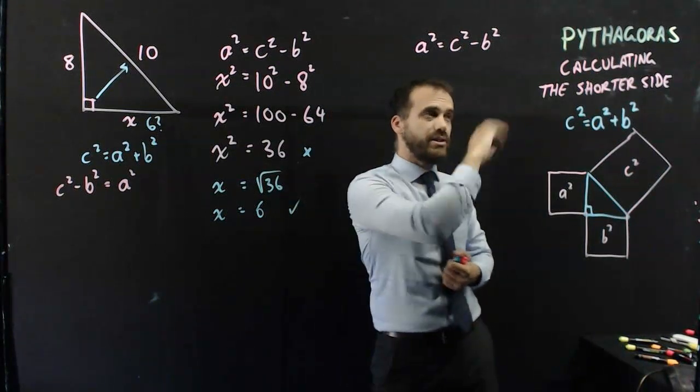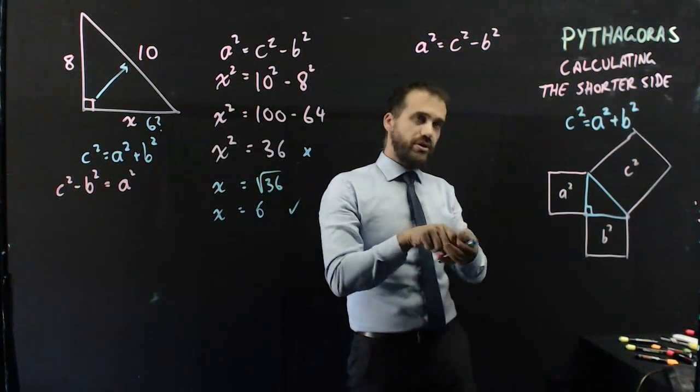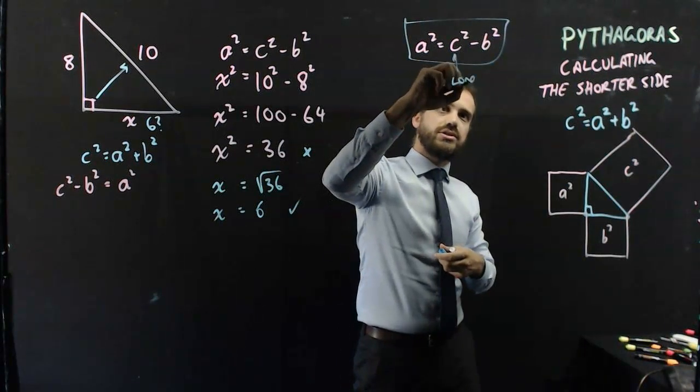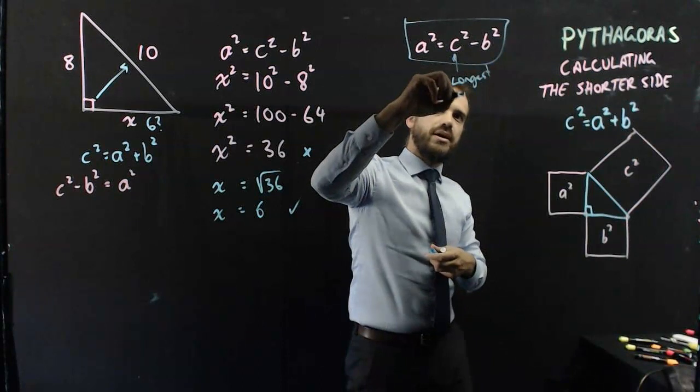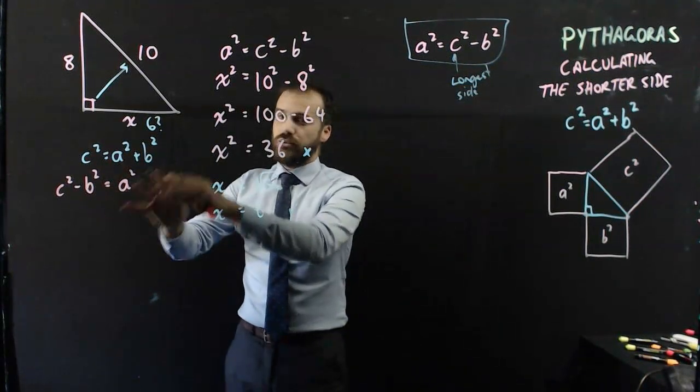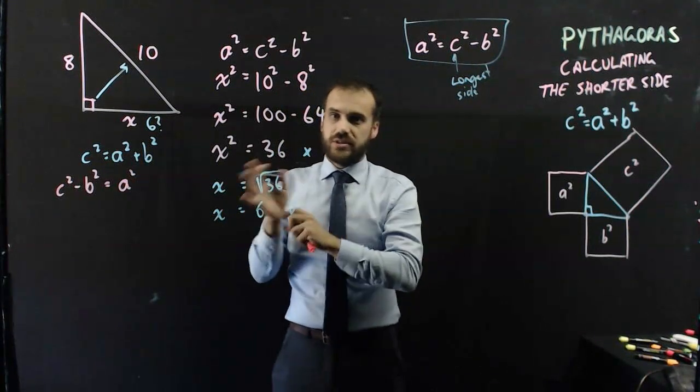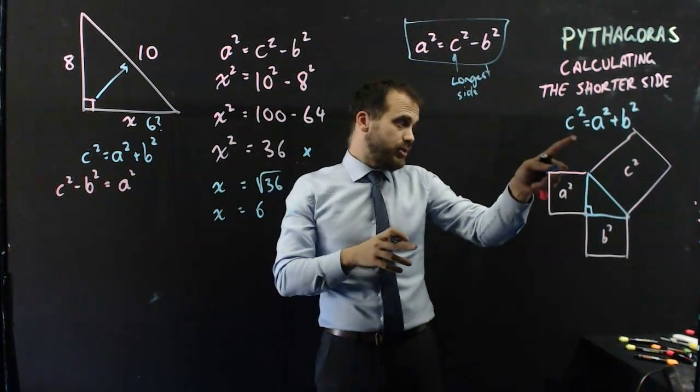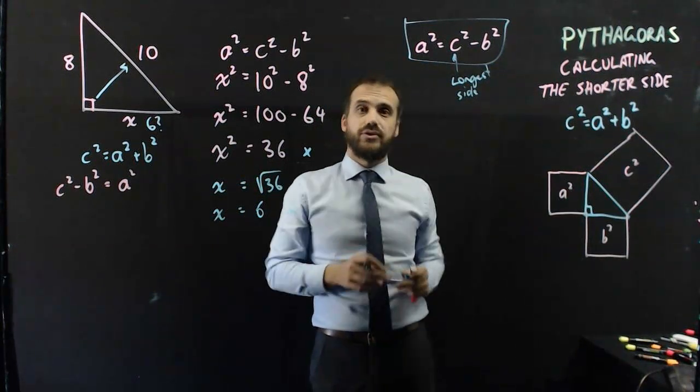All right, that's calculating the shorter side. You can sort of remember this formula if you want to. Remember that that's the longest side. That's the hypotenuse. Or, if you feel pretty comfortable, you can kind of rearrange your Pythagoras' formula for the longest side and for the shortest side.